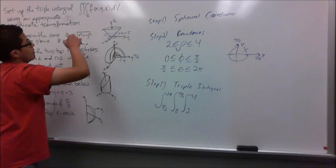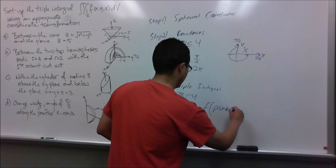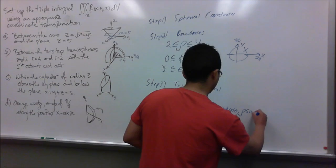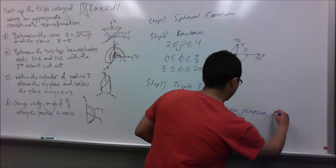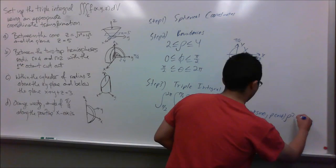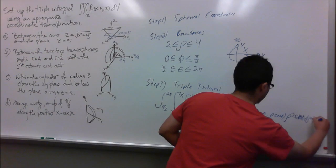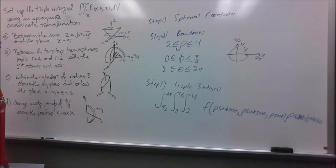We change our function f of x, y, z to spherical coordinates. So x becomes rho sine phi cosine theta, y becomes rho sine phi sine theta, and z becomes rho cosine phi. We multiply by the Jacobian, which is rho squared sine phi, giving d rho d phi d theta. That is our triple integral.